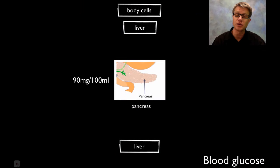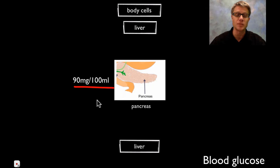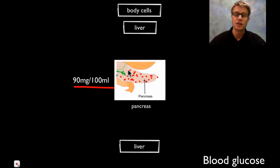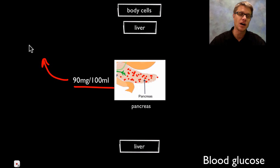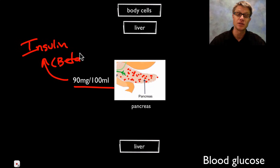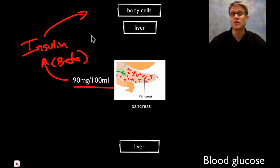The next one is blood glucose. Blood glucose is super important because glucose is the fuel that fuels living cells. Blood glucose should stay at about 90 milligrams per 100 milliliters. What's going to be sensing that is the pancreas. There are important cells on the surface of the pancreas called the islets of Langerhans. If blood glucose goes higher than this, we're going to secrete insulin from cells called the beta cells. Insulin causes body cells to take in glucose.